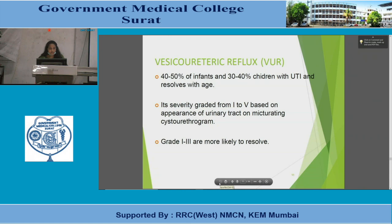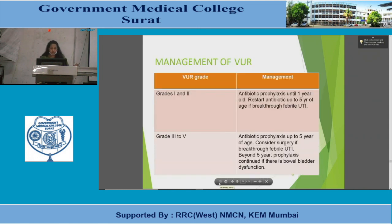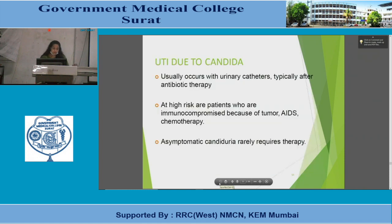Vesicoureteral reflux occurs in 40–50% of infants and 30–40% of children with UTI and resolves with age. Severity is graded 1–5 based on the micturating cystourethrogram; grades 1–3 are more likely to resolve spontaneously. Management: grades 1–2 — antibiotic prophylaxis until one year of age, restart up to five years if breakthrough febrile UTI occurs. Grades 3–5 — antibiotic prophylaxis up to five years of age; consider surgery if breakthrough febrile UTI occurs; beyond five years continue prophylaxis if bladder dysfunction is present.